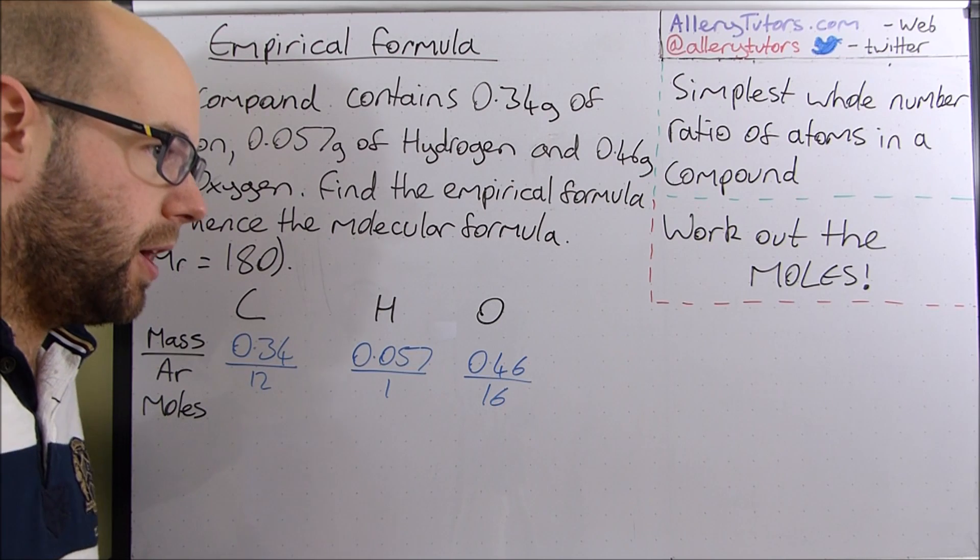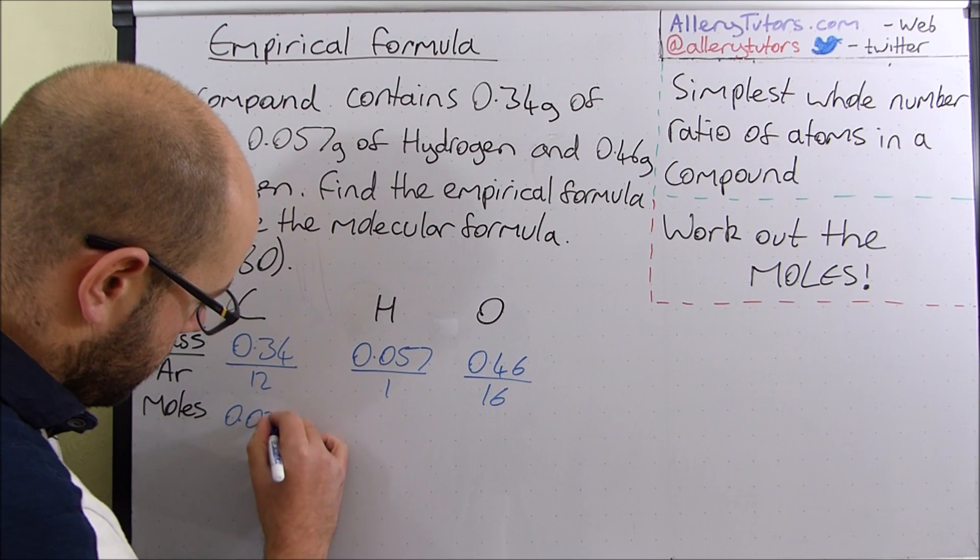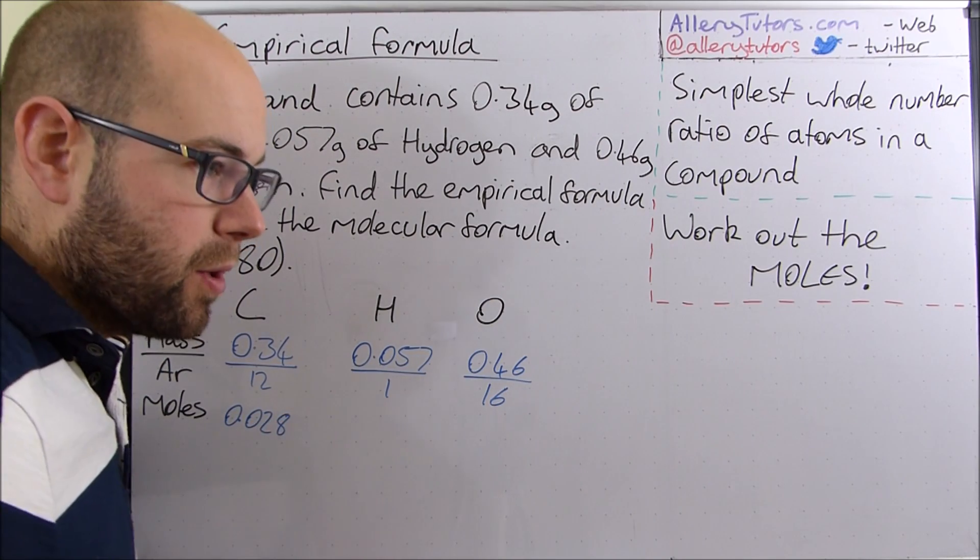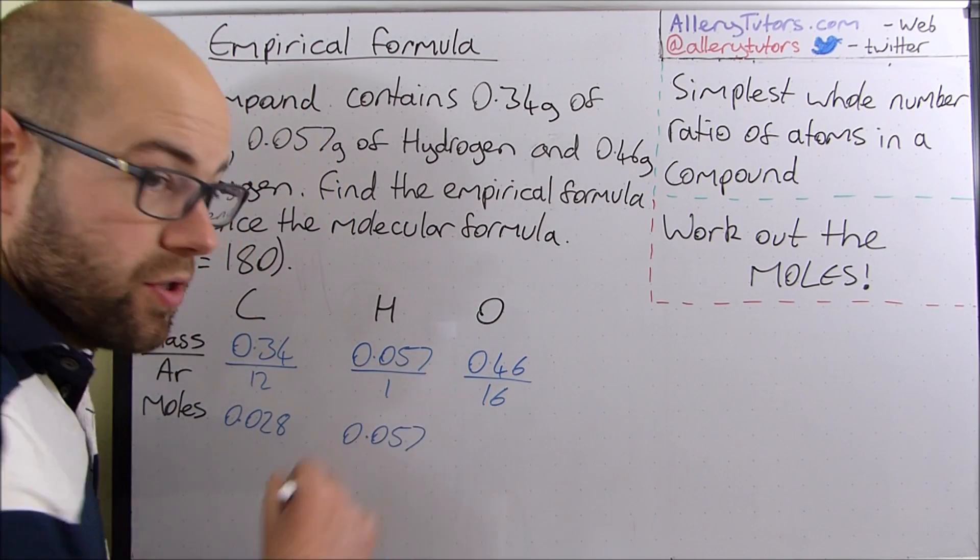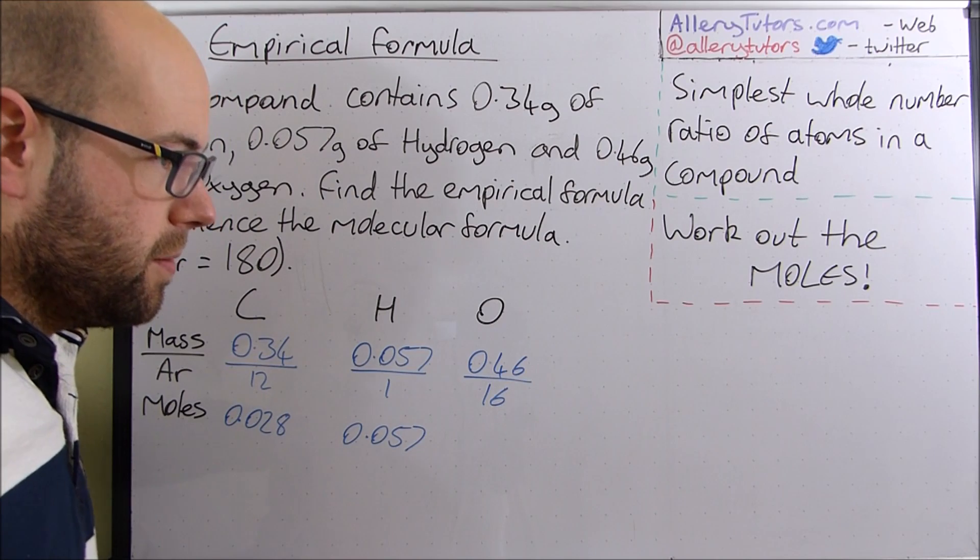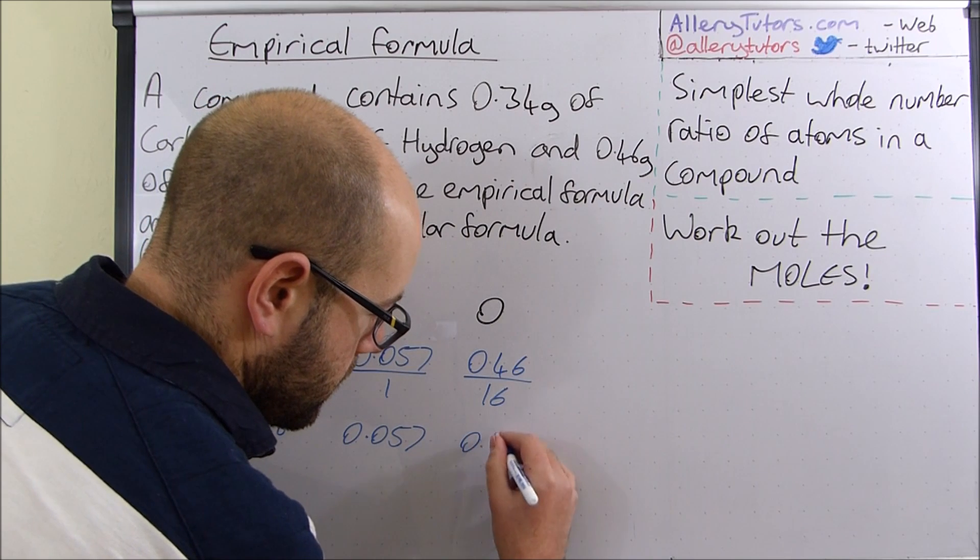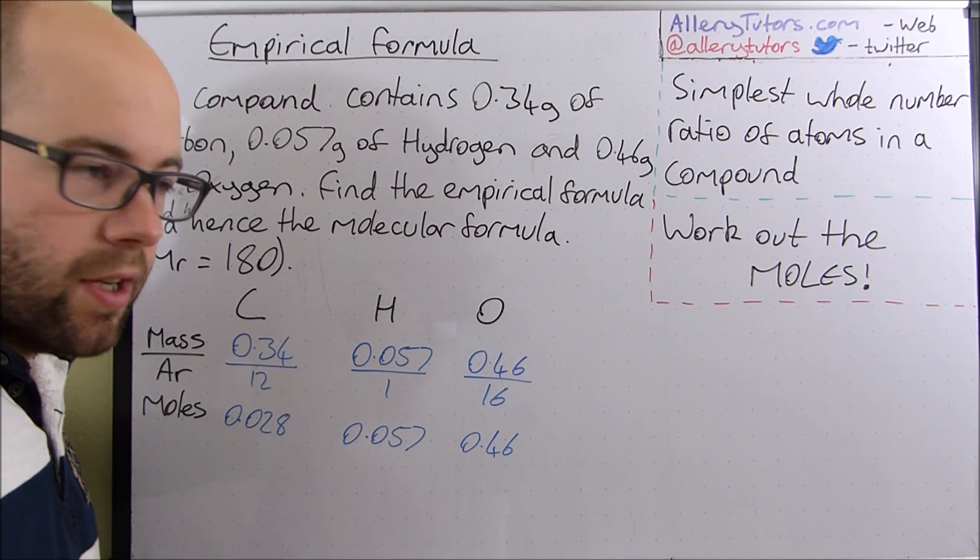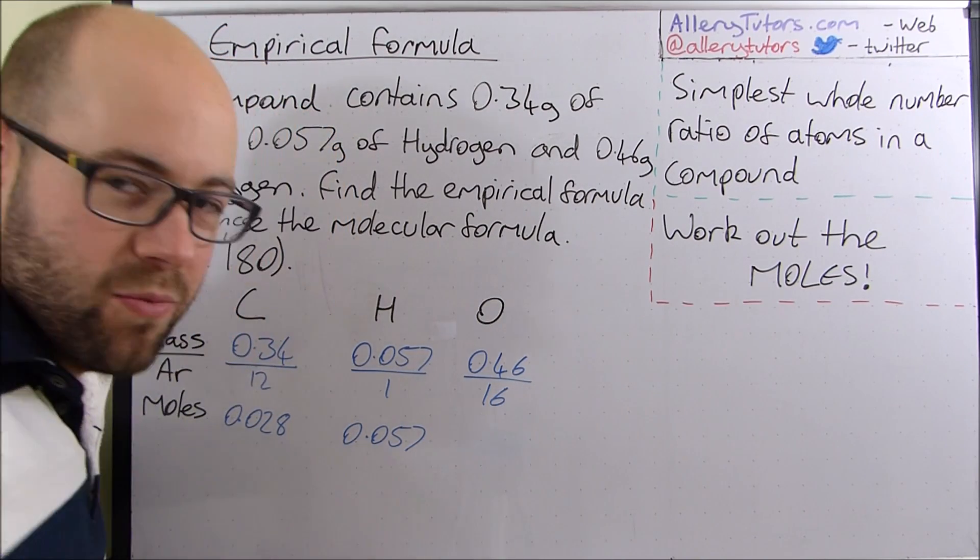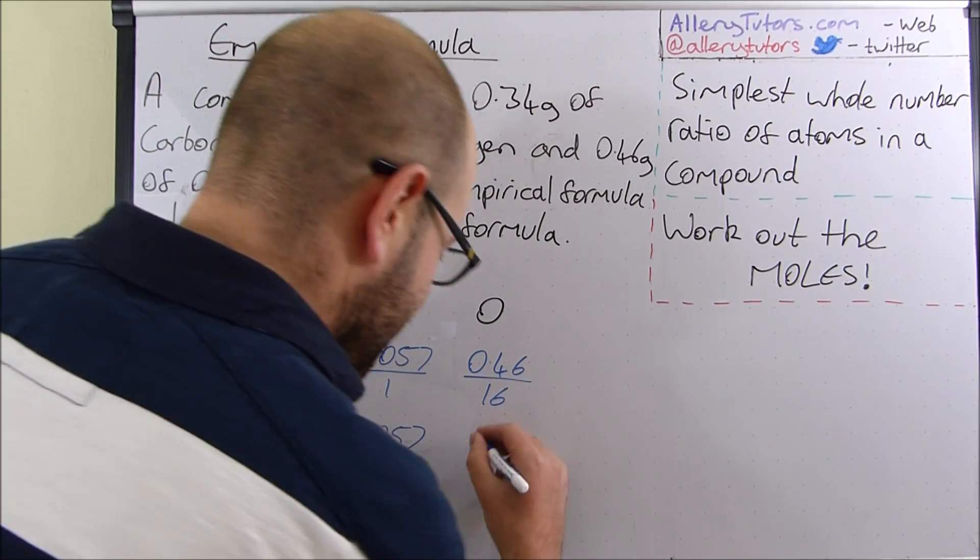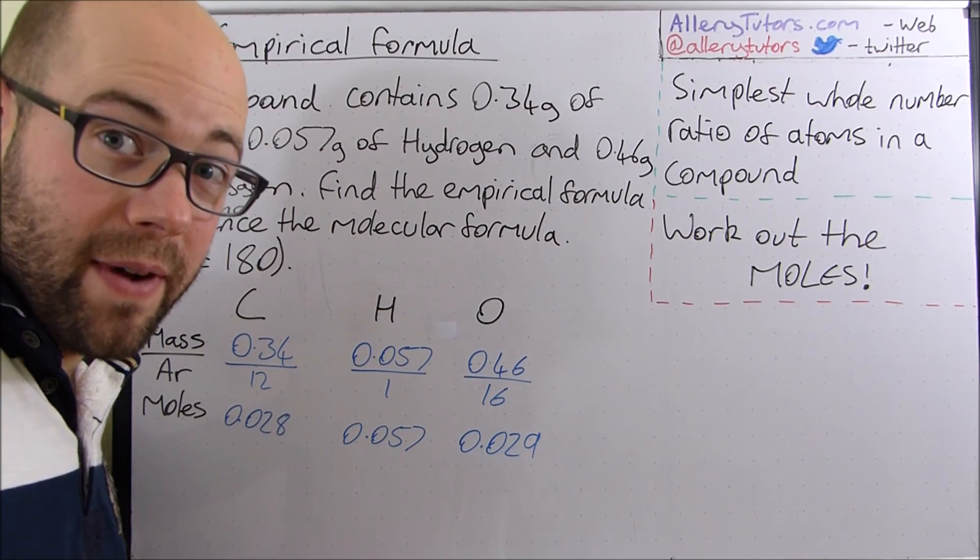So the number of moles of carbon should come out at 0.028. The number of moles of hydrogen is 0.057 because you're just dividing it by one and the number of moles of oxygen is 0.029. So we've got the moles of everything.